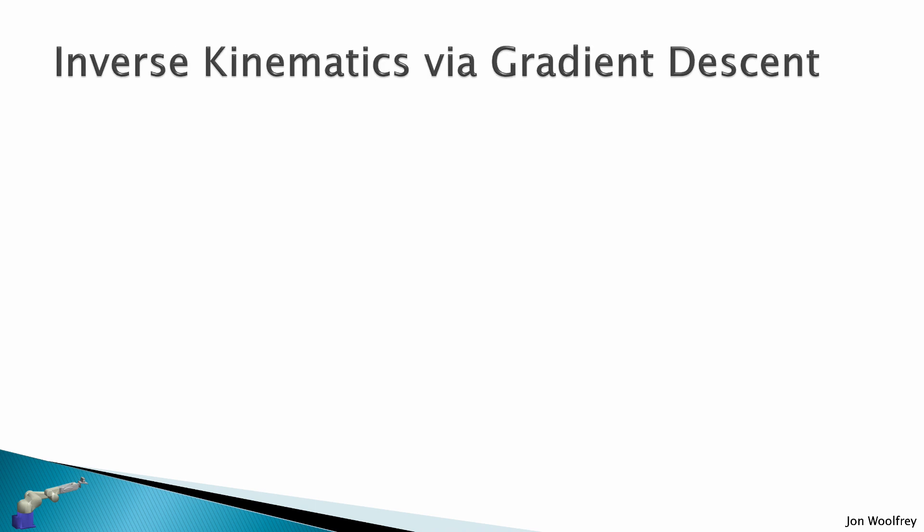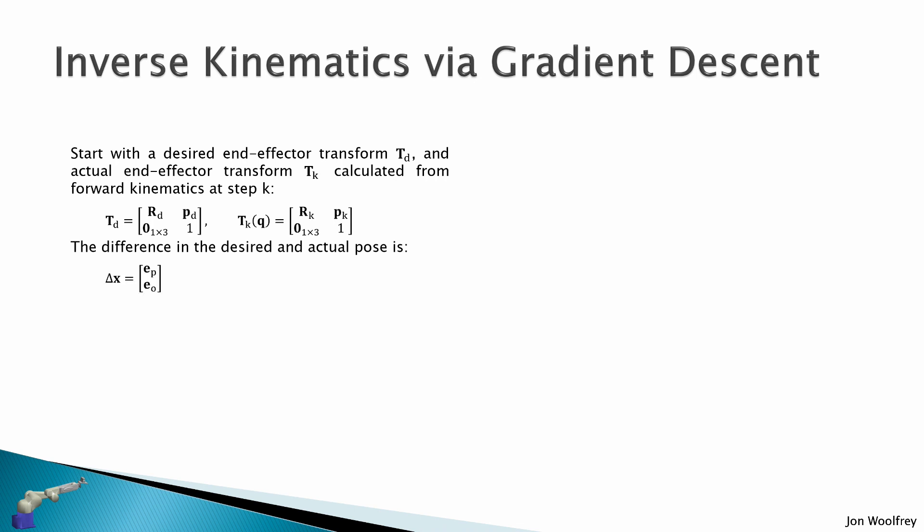Now let's solve the inverse kinematics via gradient descent. We start with the desired end effector transform T_d, and an actual end effector transform at step k, given our forward kinematics at this particular time. So we have our desired transform as a homogeneous transformation matrix, and our actual transform at our current joint configuration q. The difference in the desired and actual pose is given by delta x, which I say is this error, e_p and e_o. So the position error is just the desired minus the actual, and the orientation error I got from calculating the rotation error. And we know that we can extract the roll pitch yaw angles from this rotation error expression.